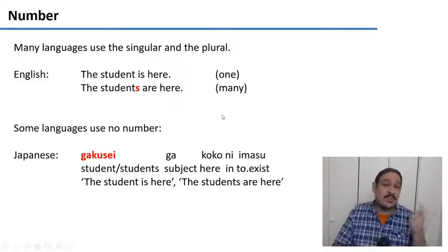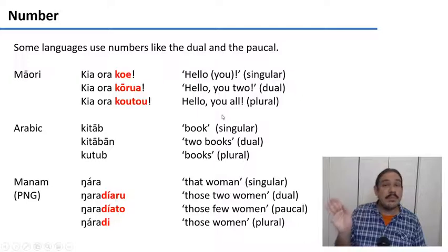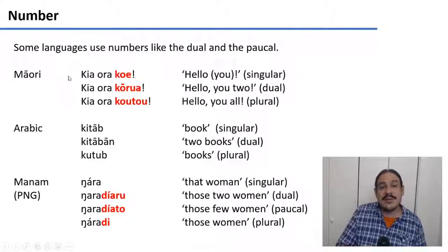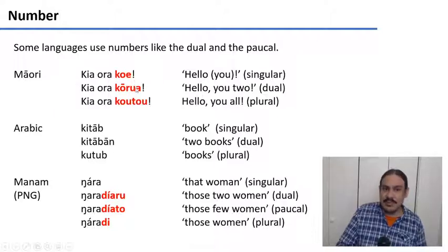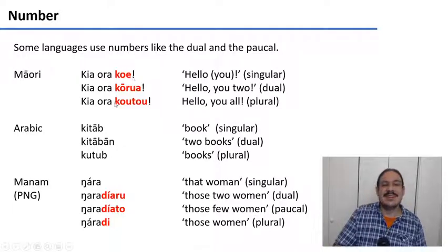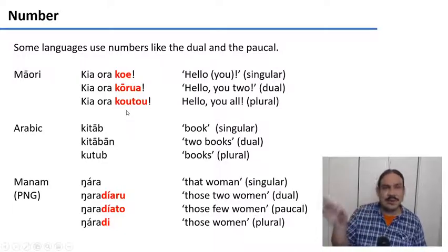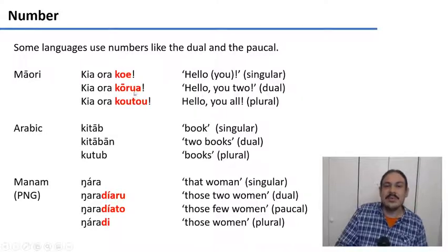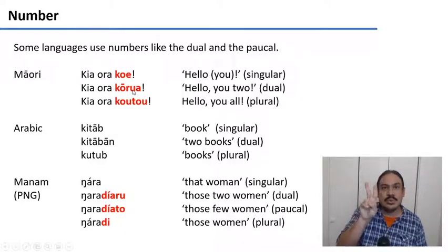So there are languages that use singular and plural, languages that don't make any number distinctions, and languages that make more number distinctions. For example, Māori has a dual number. In Māori, you can say 'Kia ora koe' — hello, you one person — 'Kia ora koutou' — hello, you all, more than two people — but there's also 'Kia ora kōrua' — hello, you two — referring specifically to two people you're talking to.